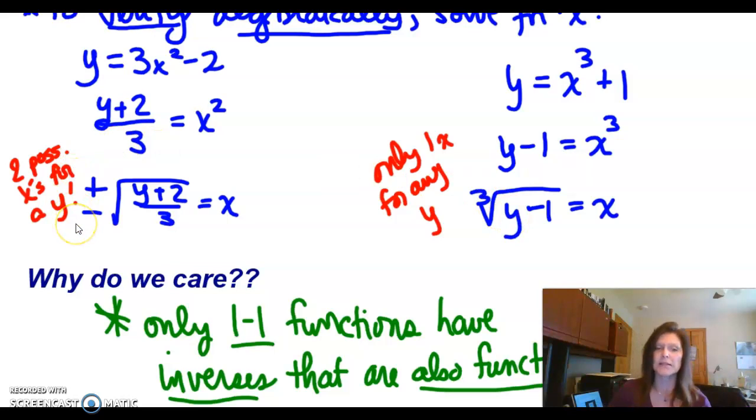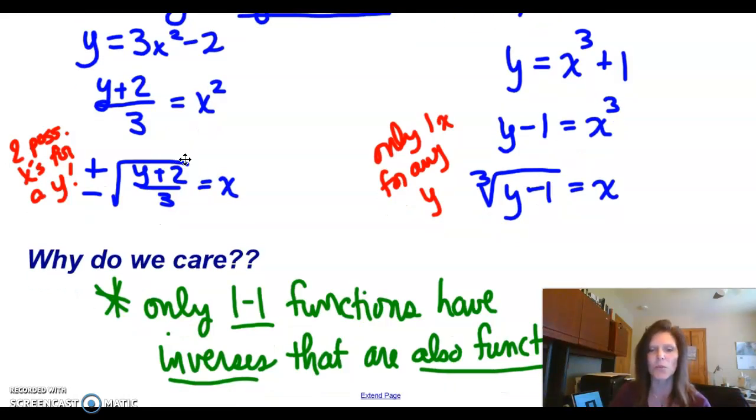On the other hand, with the other function, if we have solved for x, we would get a plus or minus the square root of whatever's inside. So we would get two different possibilities for that one single x. So that tells me that it's not going to be one-to-one.